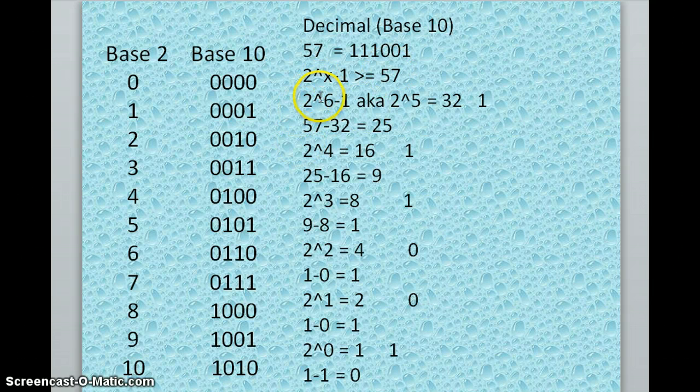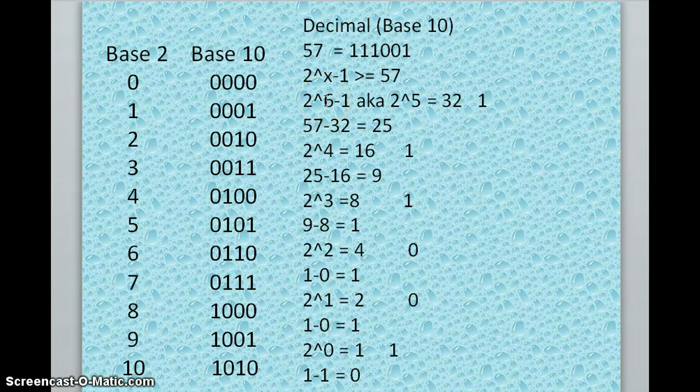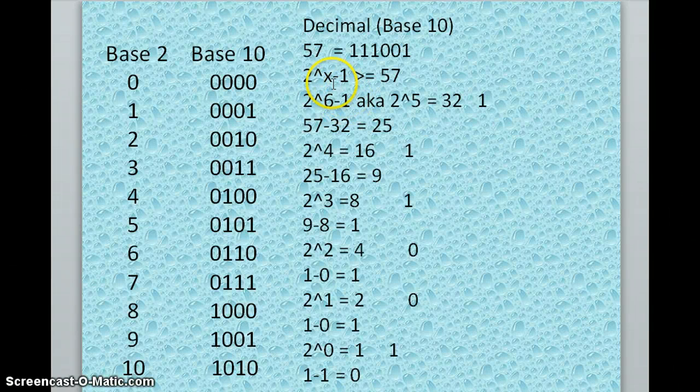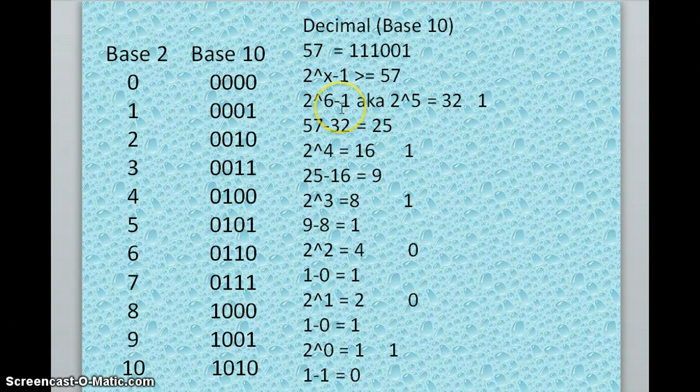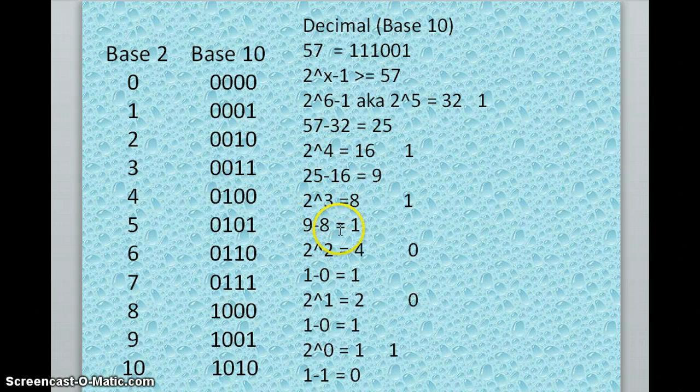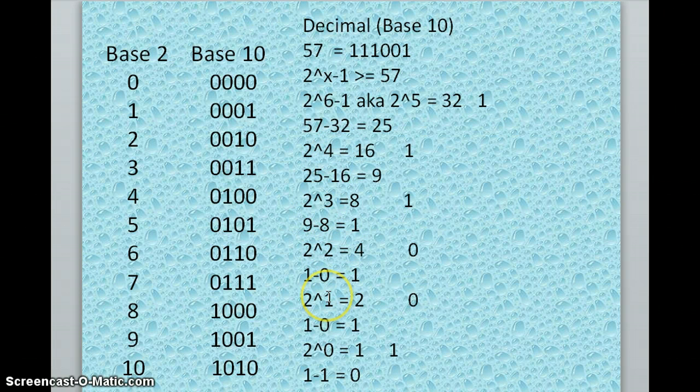And in this case, it's going to be 2 to the 6th. However, we don't want to contain this number, we want to represent this number. So in order to prevent an overflow, we are going to use the power less than the one used to contain it, and we'll add all the subsequent powers, the lesser powers, in order to add up to this number.